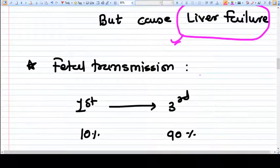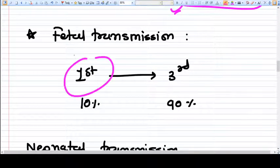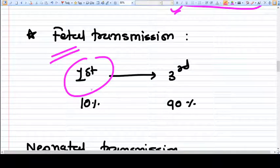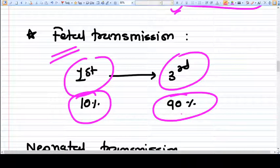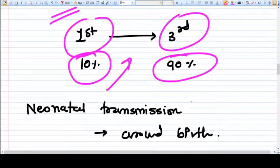These all can happen with HBV. Now, as you can see, fetal transmission in the first trimester is 10% and in the third trimester is 90%. So you can see that the transmission rate increases with gestational age.